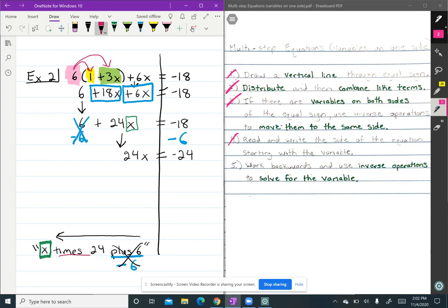So then my next step is times 24. So the inverse would be division. So divide by 24 on both sides. 24 divided by 24 will give me 1X. And then negative 24 divided by 24 will give me negative 1. And then using the invisible 1 rule on the left-hand side, I know 1X is the same thing as X. So X equals negative 1.